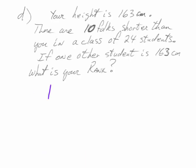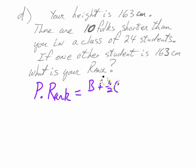Let's try this one. Your height is one sixty-three. There's ten people in your class that are shorter than you, and your class has twenty-four people, and there's one other student that's the same height as you. What is your rank? Where would you fall on a line if you had like a line segment with a hundred chunks on it? And of course you've got a formula for that. So the rank, or the P rank, the prank.